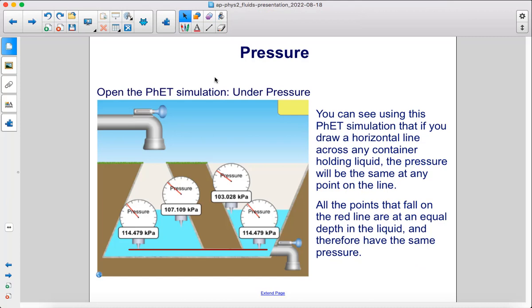Open the PhET simulation under pressure. You can click this little globe in the corner. That's a link. You can see using this PhET simulation that if you draw a horizontal line across any container holding liquid, the pressure will be the same at any point on that line. All the points that fall on the red line are at an equal depth in the liquid and therefore have the same pressure.